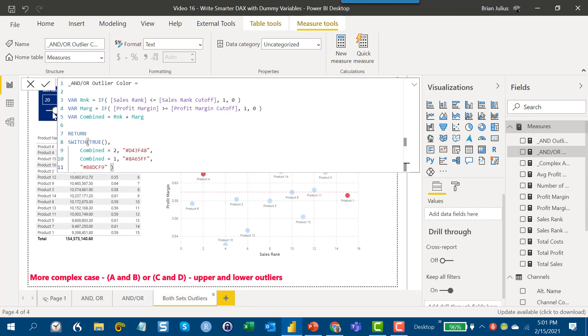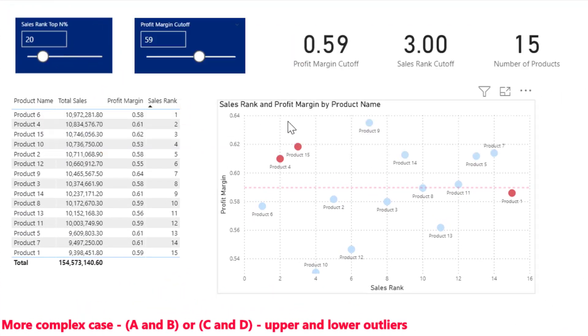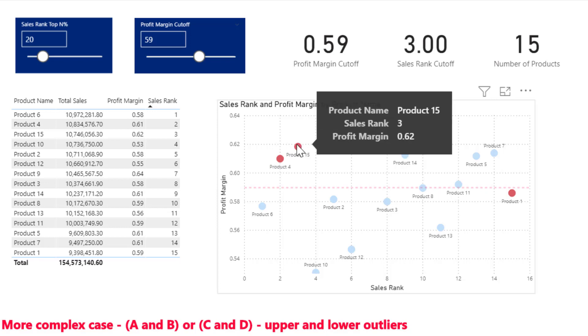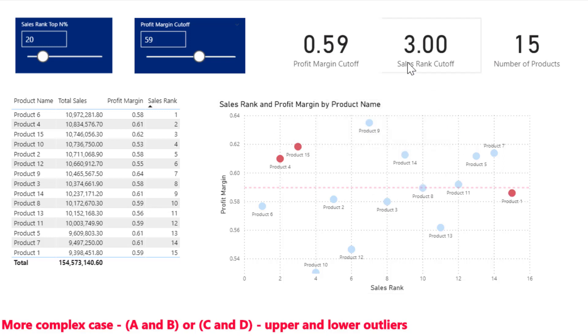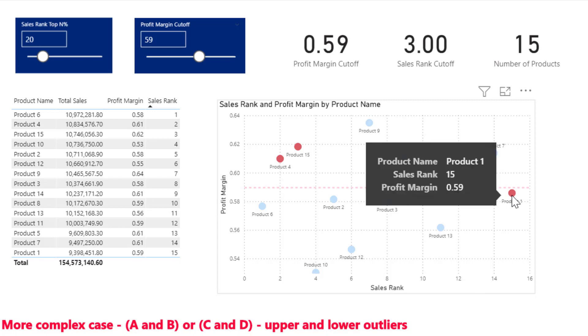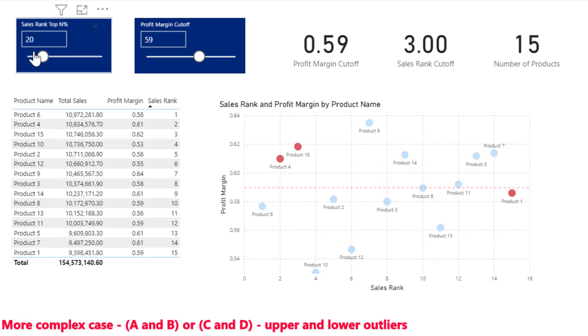If we go back to our last condition, we can also look at what happens if we want to look at two sets of outliers. So basically, if we want to look at A and B, so meeting both these conditions up here, or the flip side where instead of meeting the top 20 percent and above the profit margin cutoff, we want to look at below, we want to look at the bottom 20 and below the profit margin cutoff. So right here then, in this case we're looking at sales rank cutoff of one, two, or three at the top end, and the bottom end it would be 15, 14, 13 at the bottom, and below the 0.59 cutoff, so this observation right here. And again, this is entirely dynamic, and so if we slide that around, we start picking up more points.